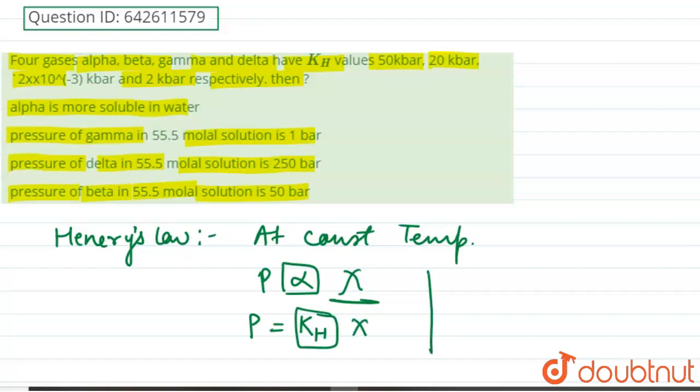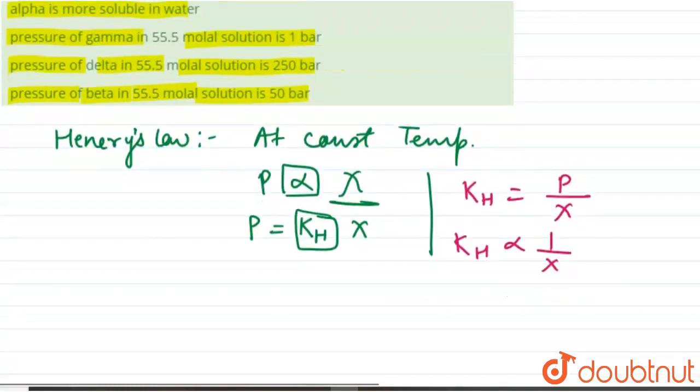Now if we calculate the value of KH, we can say KH equals partial pressure upon mole fraction. That is, KH is inversely proportional to mole fraction, which means solubility. Higher the value of KH, lower will be the solubility.